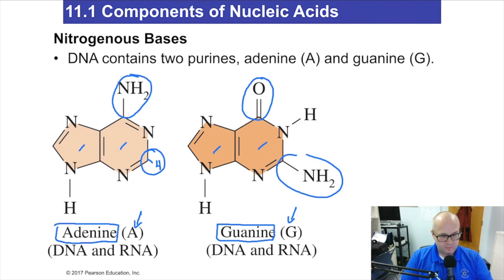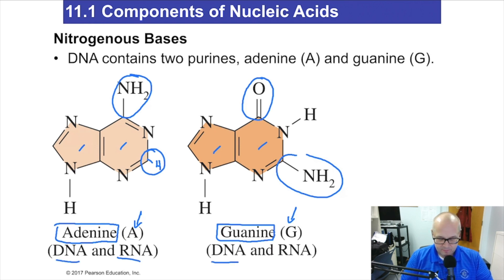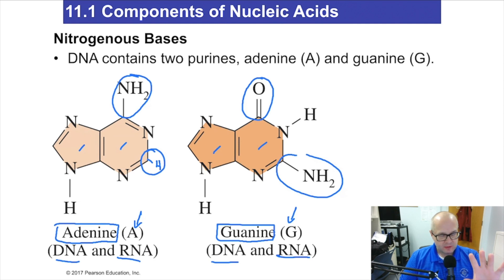Adenine and guanine are both found in RNA and DNA, which we'll talk about later. For now, just write the structures of these down and draw them. Pause the video if you have to. Draw them carefully.